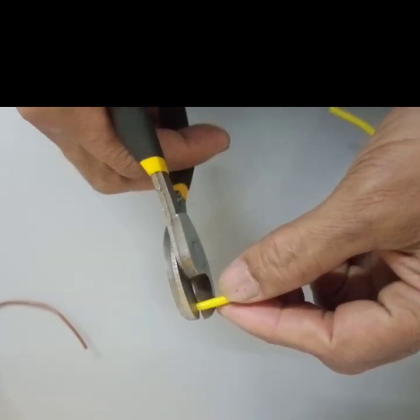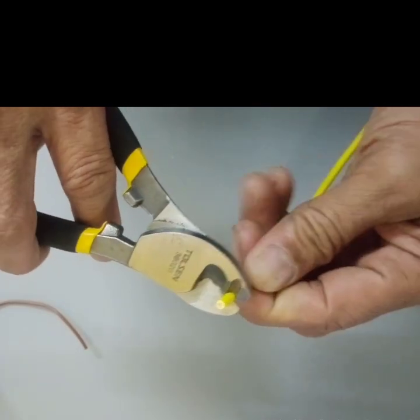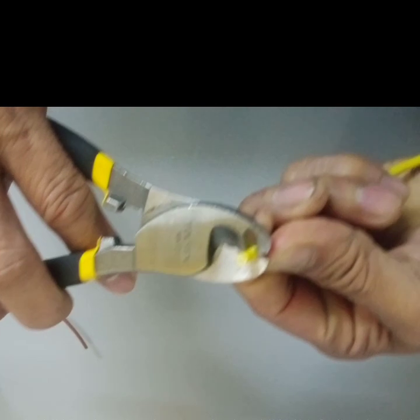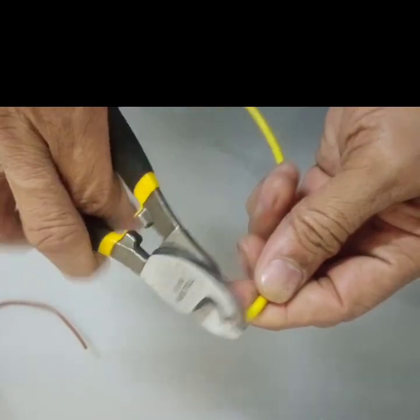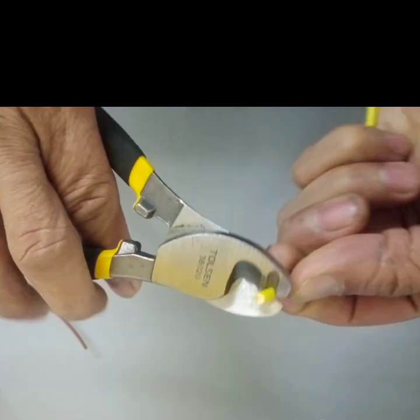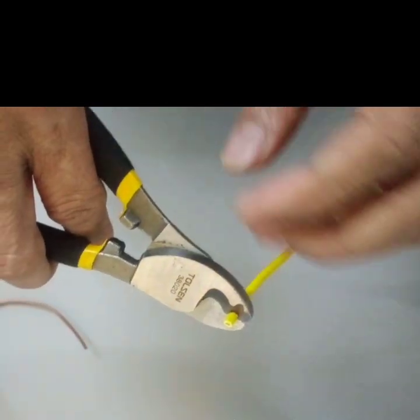To use a wire stripper, start by selecting the appropriate size of the blade that matches the thickness of the wire. Then place the wire between the blade and the handle, making sure that the wire is aligned with the cutting edge of the blade.